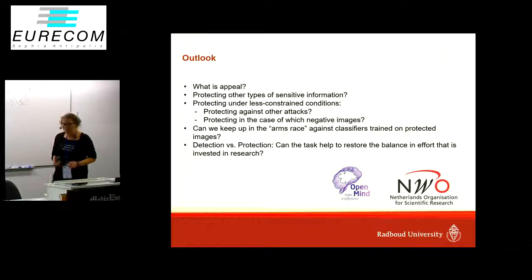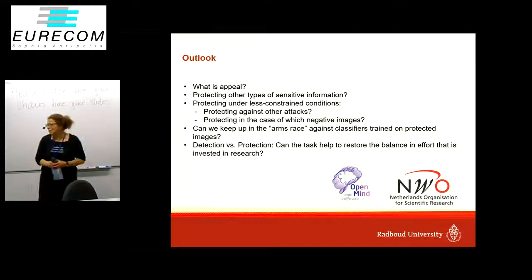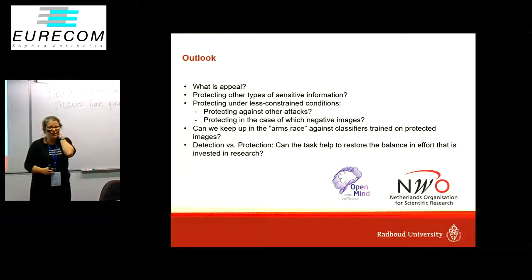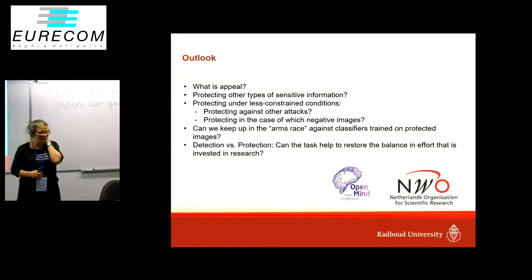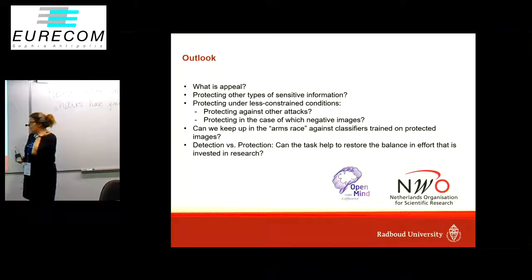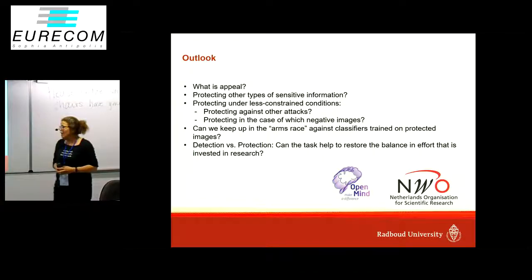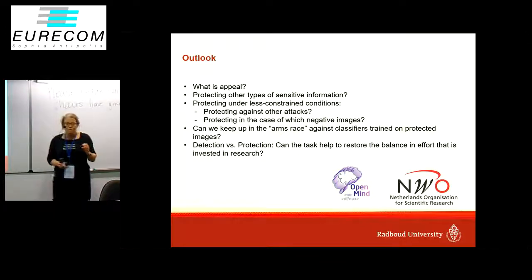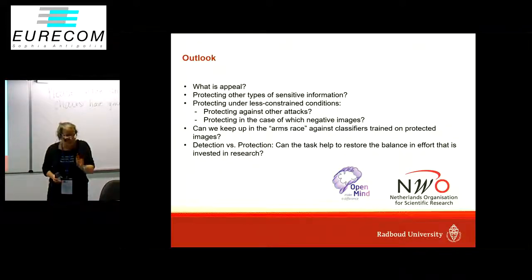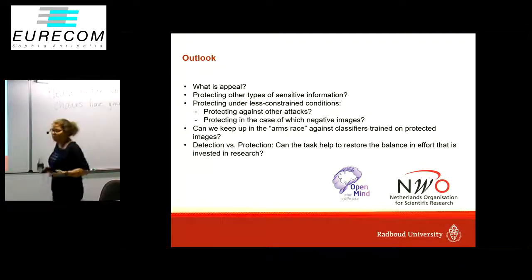There's a lot of outlook for this task. One of the hardest questions is: what is appeal? Can we protect other kinds of sensitive information in images and videos? And can we protect against other attacks, against generic attacks? When you have an attack in this space — inferring the class of an image, attacking by inferring that it's a beach when you shouldn't — it depends on what your negative classes are, what's in your background collection.